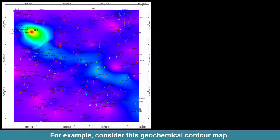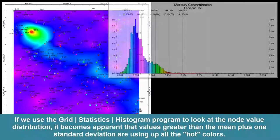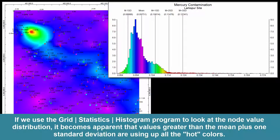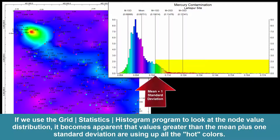For example, consider this geochemical contour map. If we use the Grid Statistics Histogram program to look at the node value distribution, it becomes apparent that values greater than the mean plus one standard deviation are using up all the hot colors.